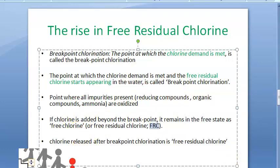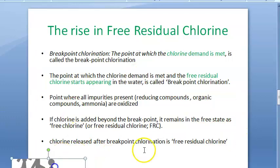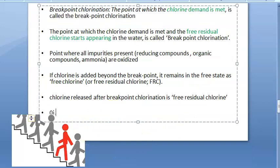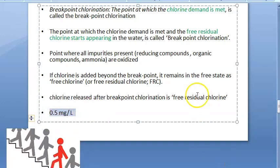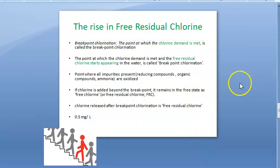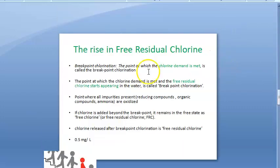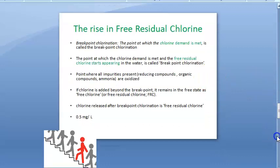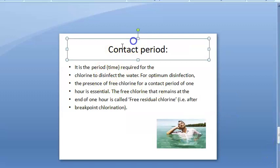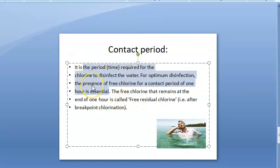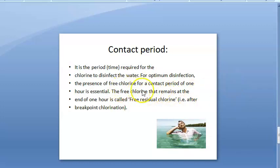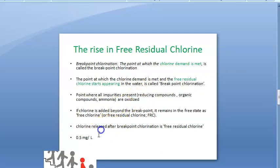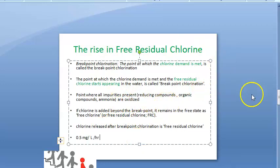The free residual chlorine (FRC) should be 0.5 milligram per liter for at least one hour — this is the desirable free residual chlorine level. The contact period is the time chlorine requires to disinfect the water, usually about one hour. So at least 0.5 mg/L of free chlorine should be present for at least one hour. The breakpoint is defined as the point where chlorine demand is met and free residual chlorine starts appearing — all impurities are destroyed.